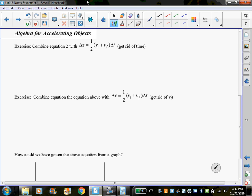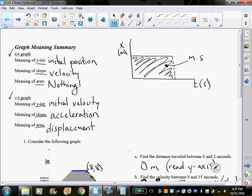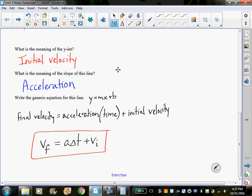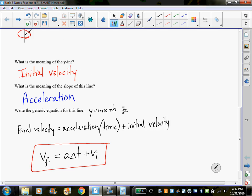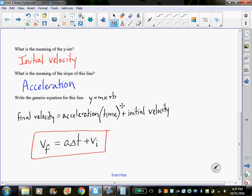Let's look at doing some algebra for accelerating objects. What we'll start with is actually a derivation of two algebraic equations for this class. If you go to the beginning of your notes, you'll see that we already derived one algebraic expression from your lab: Vf equals a delta t plus vi. We got that by looking at a velocity versus time graph for an accelerating object and writing the equation that would draw this line.